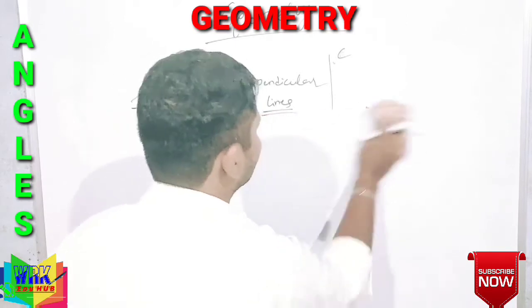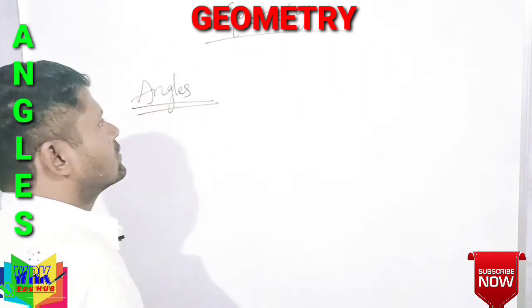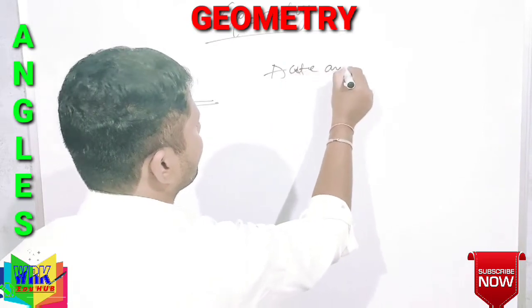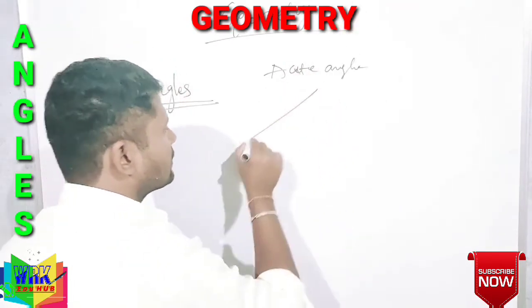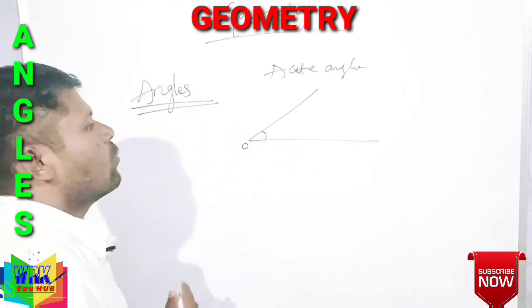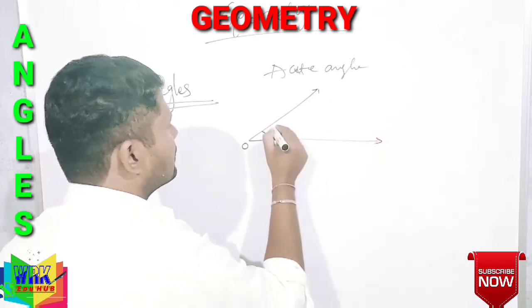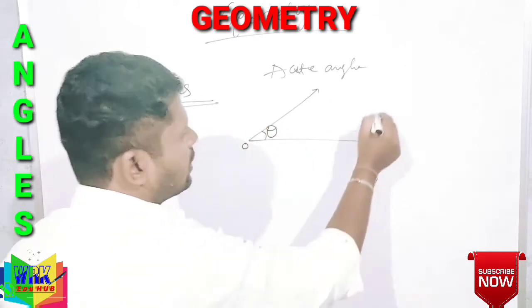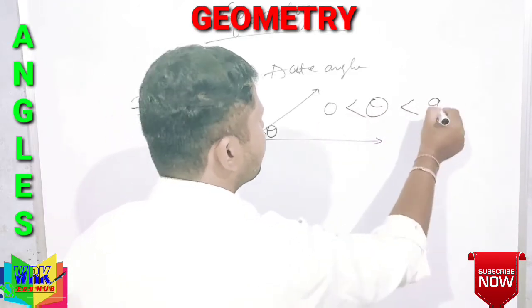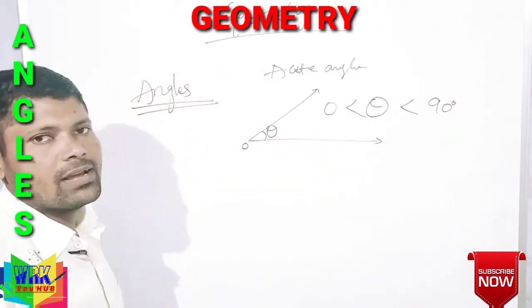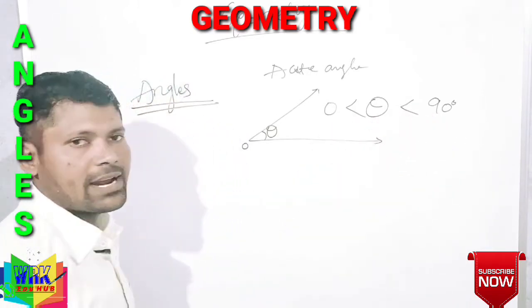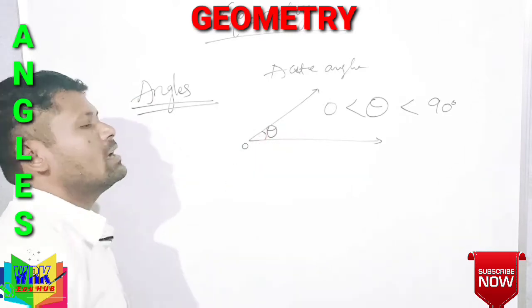Now we move into angles. First one: acute angle. O is called the vertex, and theta is the angle. If theta lies between 0 and 90 degrees, then this angle is said to be an acute angle.